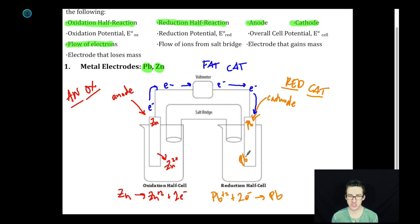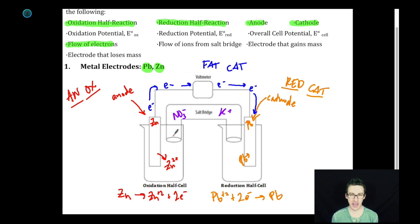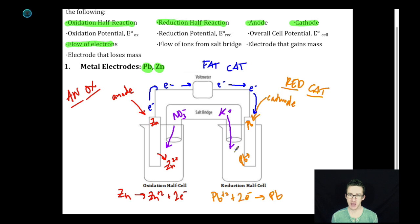I'm going to plate a bunch of solid lead from solution onto my cathode. In other words, I'm going to be adding a bunch of positive charge to my oxidation half cell, losing a lot of positive charge from my reduction half cell. So to balance the charge and keep that flow of electrons happening, the negative anions — the nitrate ions from my salt bridge — are going to flow into my oxidation half cell to balance out all those zinc ions that are plopping into solution. And my potassium ions from the salt bridge are going to flow into my reduction half cell to replace the loss of positive charge from the lead plating onto the cathode. Flow of ions from salt bridge: check.